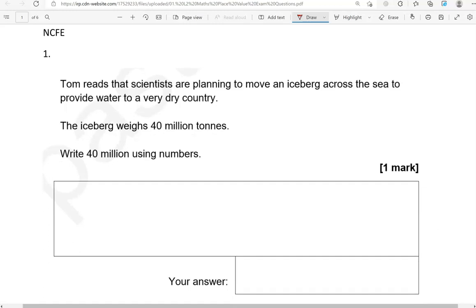The first question is from NCFE. Tom reads that scientists are planning to move an iceberg across the sea to provide water to a very dry country. The iceberg weighs 40 million tonnes. Write 40 million using numbers.